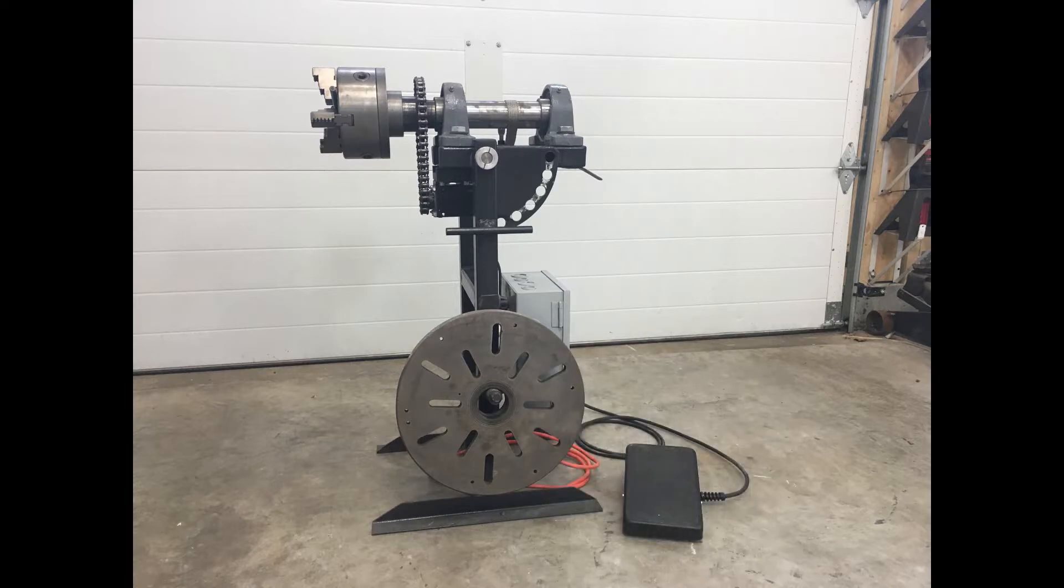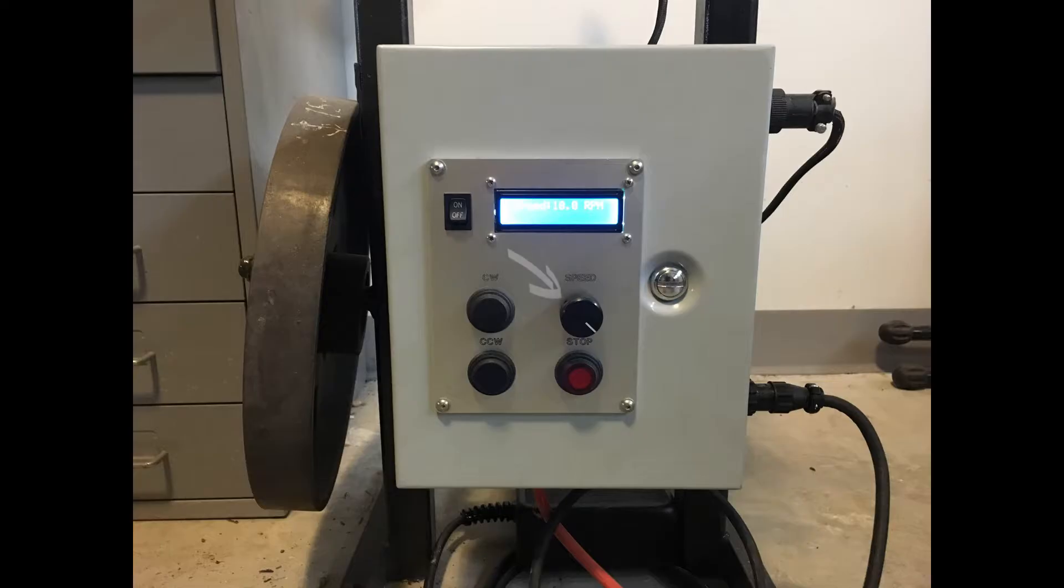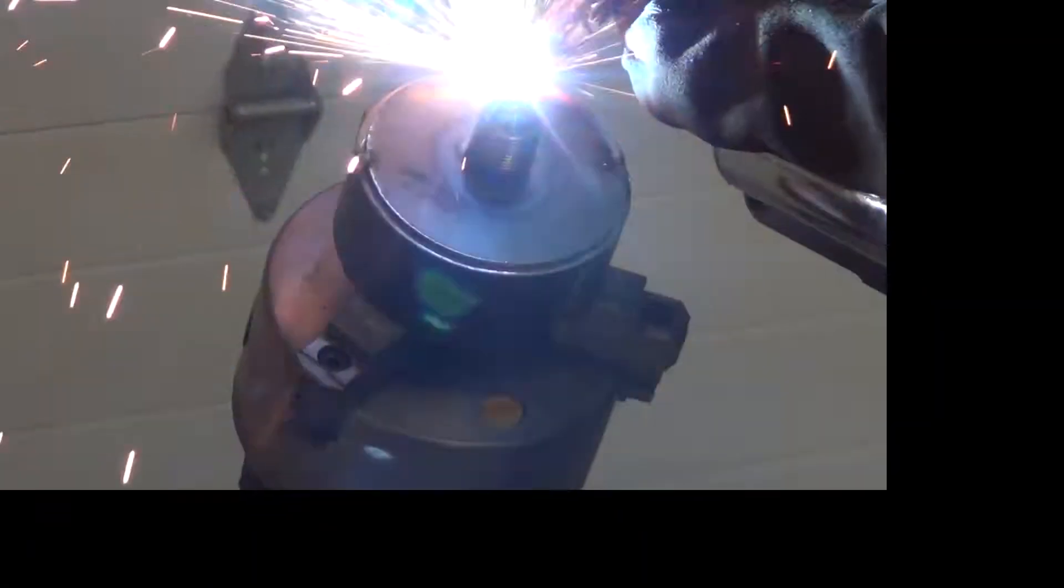So I designed this rotary positioner about two and a half years ago. The speed was controlled by a potentiometer and the range was 0-10 RPM in 0.1 increments. And at the time I just sort of guessed at the speed.